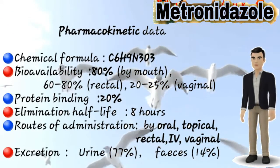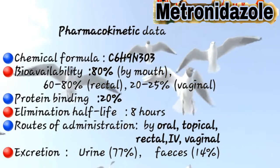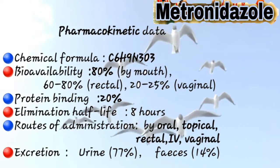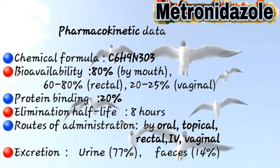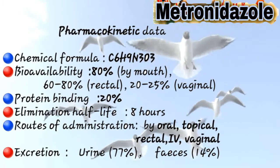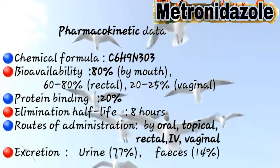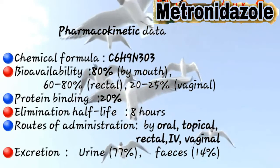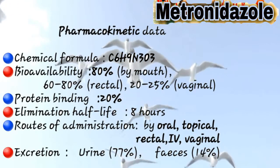Regarding routes of administration, metronidazole can be administered via the vaginal route, rectal route, intravenous injection, oral route as a tablet, and topical route. For excretion, approximately 77% of metronidazole is excreted through urine and around 14% through feces.